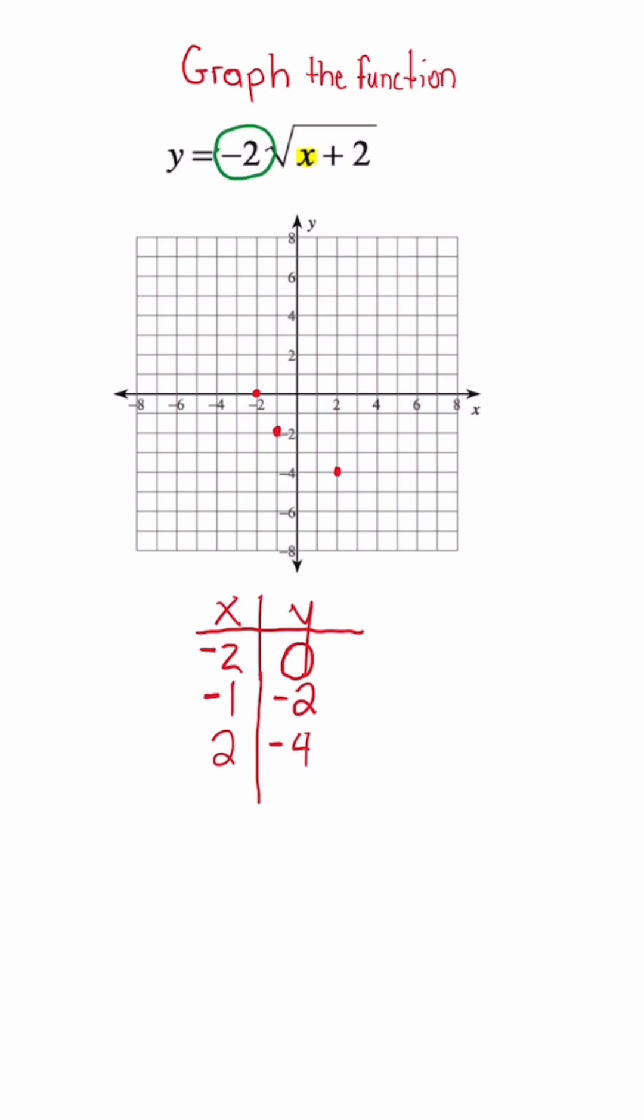And then if we do one more point, the best X would be 7. 7 plus 2 gives me another perfect square of 9. Its square root is 3. 3 times negative 2 is going to give me negative 6. So the last ordered pair would be 7, negative 6, which would be right here.